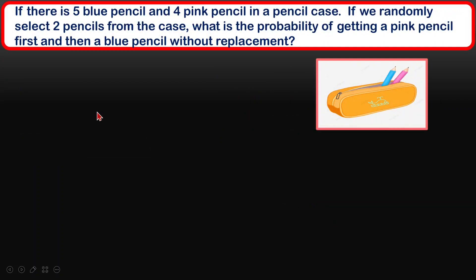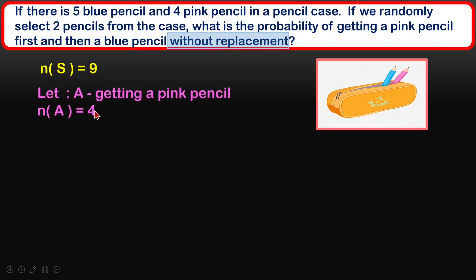Let's look at this example. If there are five blue pencils and four pink pencils in a pencil case, and we randomly select two pencils from the case, what is the probability of getting a pink pencil first and then a blue pencil without replacement? So the total sample will be five plus four, giving us a total sample of nine pencils inside the case. We are going to take out the pink pencil first, so the probability of getting the pink pencil will be four over nine, because we have four pink pencils altogether.